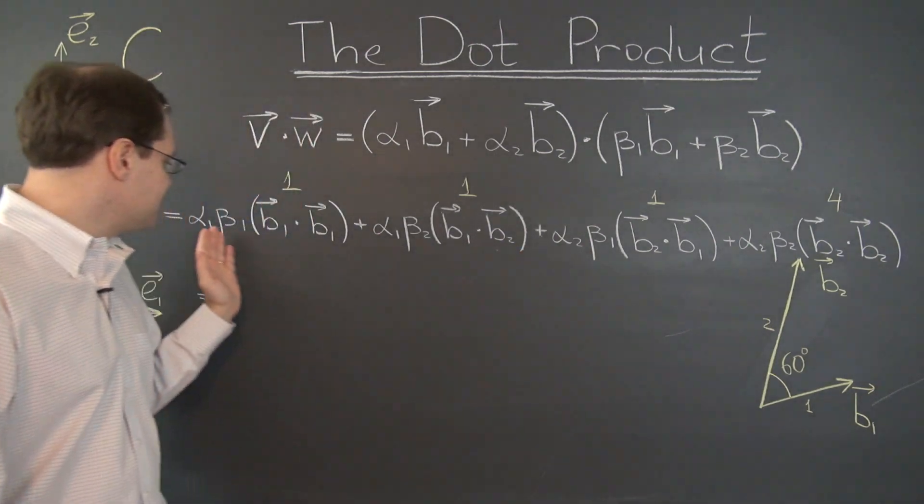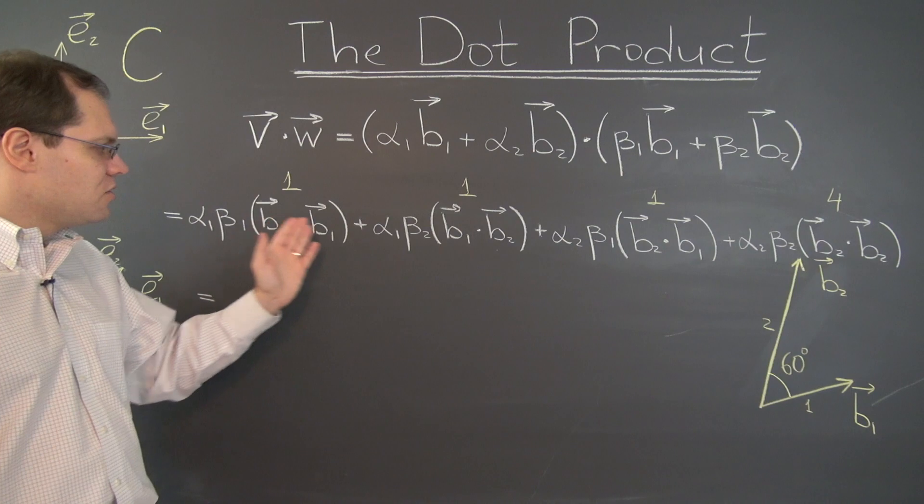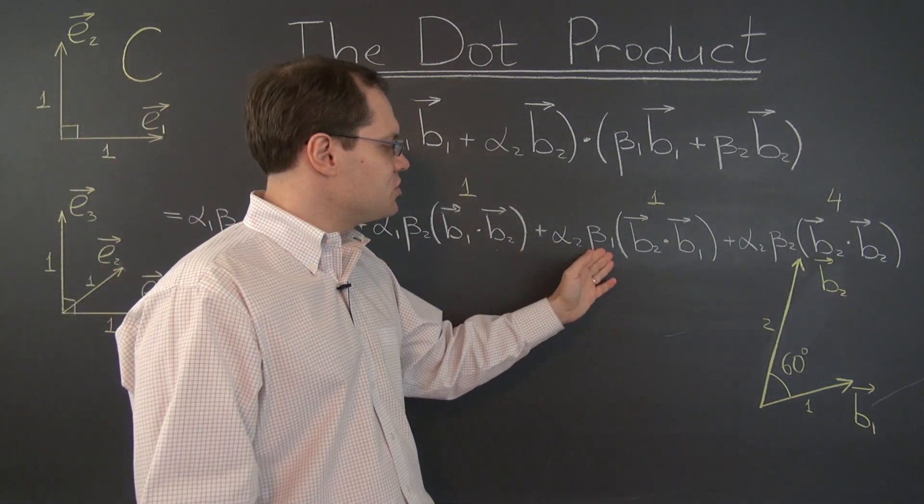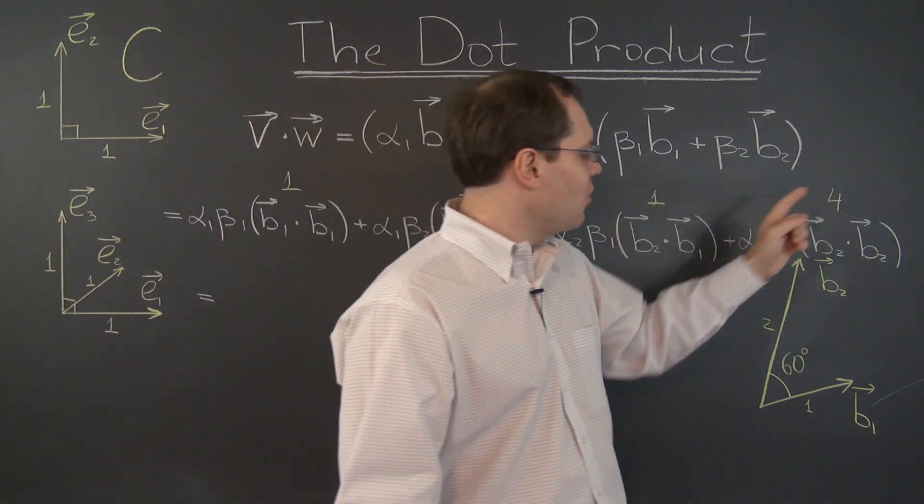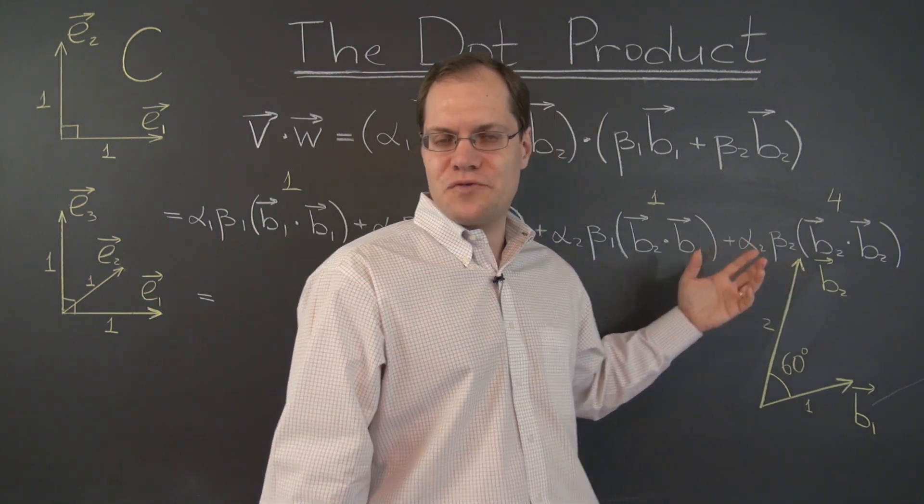Let's say it out loud. It's alpha 1 beta 1 plus alpha 1 beta 2 plus alpha 2 beta 1 plus 4 alpha 2 beta 2. A few extra terms, but nothing particularly complicated.